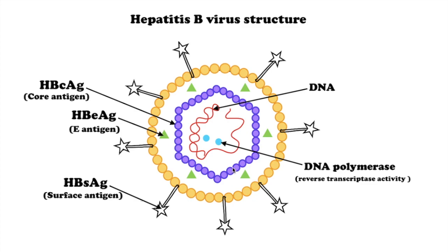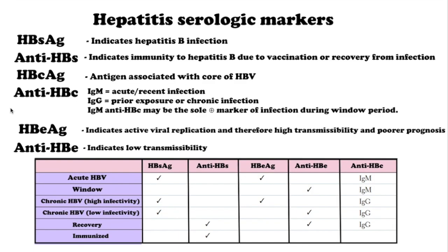HBeAg is not part of the mature HBV virion and indicates active viral replication, high transmissibility, and poor prognosis. Anti-HBs antibody becomes detectable after the disappearance of HBsAg in persons who clear the virus. Its presence following acute infection generally indicates recovery and protection from re-infection with hepatitis B.